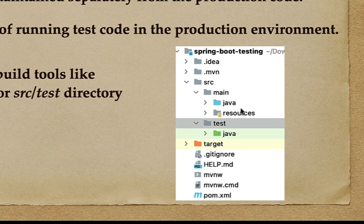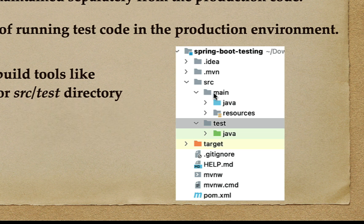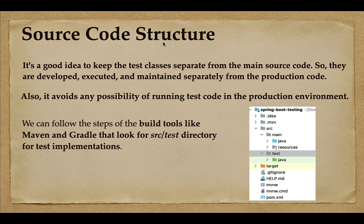For example, look at this screenshot — this project was created using Maven. Maven follows a standard structure: within the src folder, we have a main folder where all production code goes, and then a test folder where we keep all the test classes. We can keep all production-related code within the main/java package and all test classes within the test package.